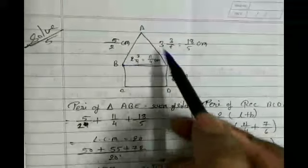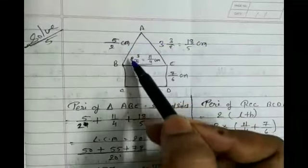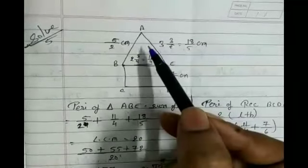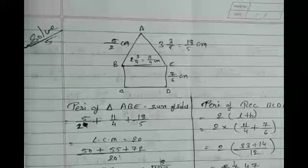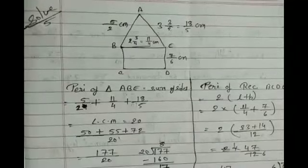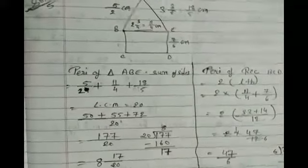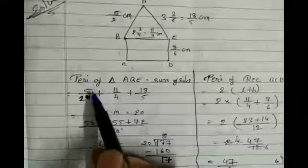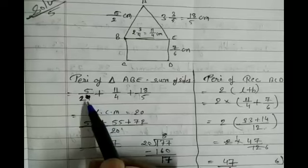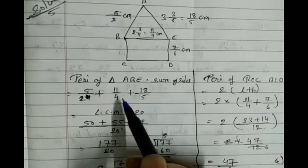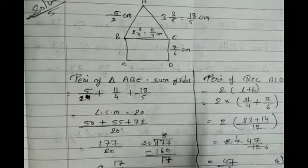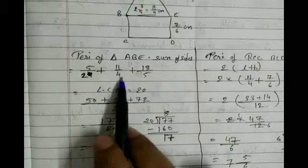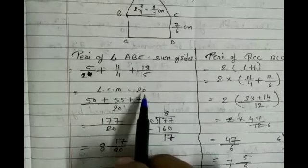To find the perimeter of the triangle, we add all three sides. So we add AB = 5/2 cm, plus 11/4, plus 18/5. Now we find the LCM of 2, 4, and 5, which equals 20.